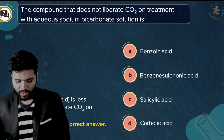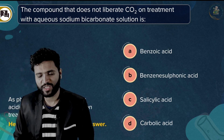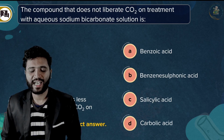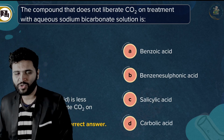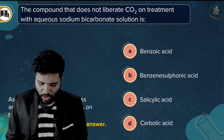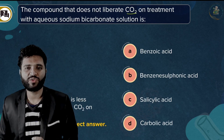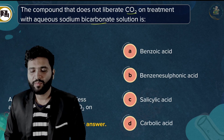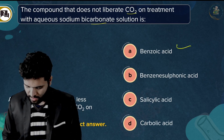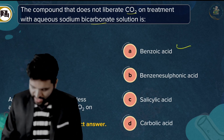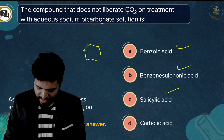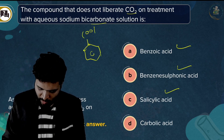Which compound does not liberate CO2 on treatment with sodium bicarbonate solution? Options include benzoic acid, benzene sulfonic acid, and salicylic acid. Benzoic acid and salicylic acid are carboxylic acids and will give CO2. Benzene sulfonic acid is a strong acid and would also react; the compound that does not liberate CO2 should be identified accordingly.